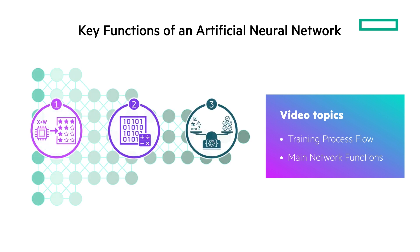A neural network has three key functions: scoring input, calculating error and loss, and adjusting the parameters of the entire network to reduce error.